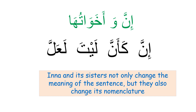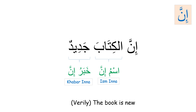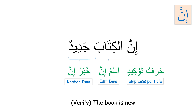The declension — the case ending — is a mirror reflecting the grammatical function of the word. If the function changes, the declension changes too. So in the example: al-kitaabu becomes al-kitaaba and is no longer al-mubtada — it becomes ism inna. Jadiidun changes its function from khabar to khabar inna. And inna is an emphasis particle — harf tawkeed.